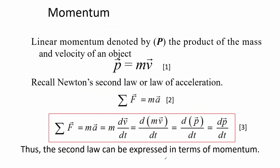Momentum, or linear momentum, denoted by P, is the product of the mass and velocity of an object. It is a vector quantity with its direction given by the velocity component. Recalling Newton's second law, the sum of forces is proportional to mass times acceleration, which we rewrite as an expression in terms of momentum — the derivative of momentum over derivative of time.